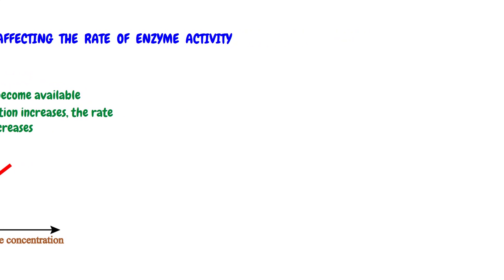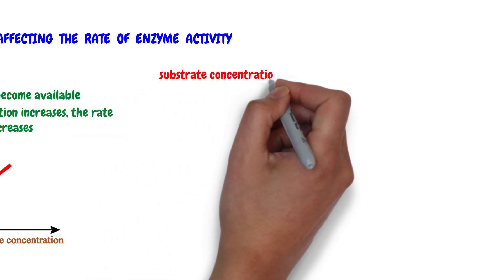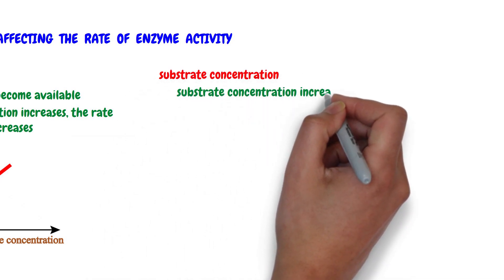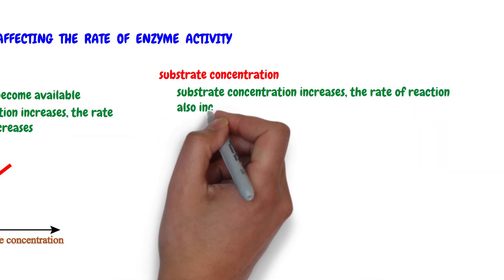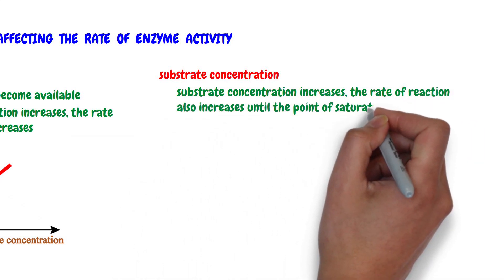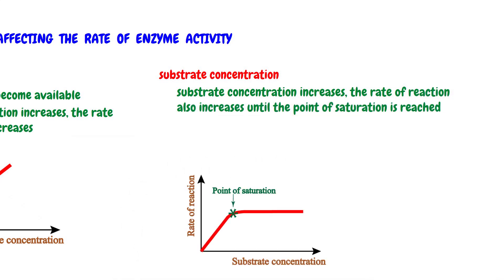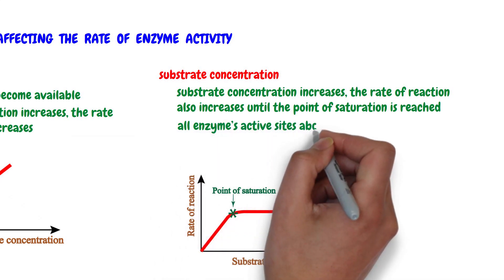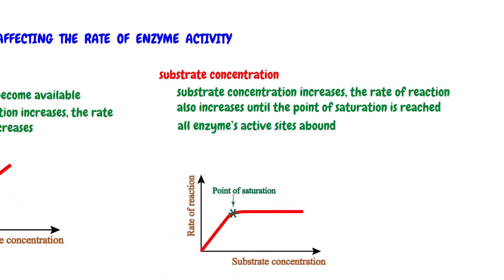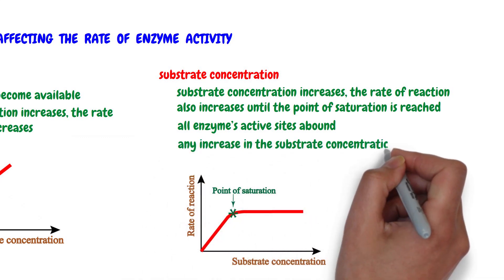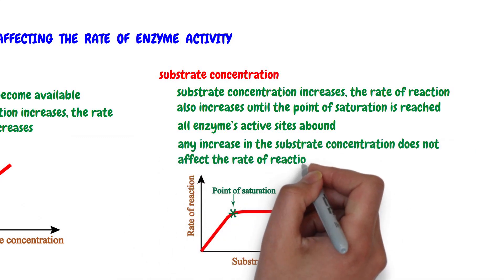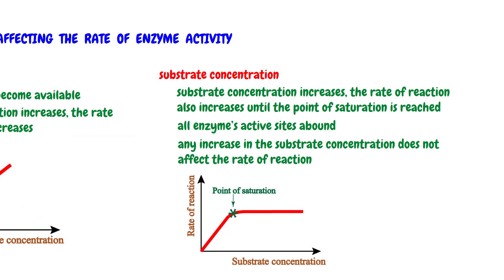The second factor is the substrate concentration. As the substrate concentration increases, the rate of reaction also increases until the point of saturation is reached. A point of saturation, also called the limiting point, is a point at which all enzymes' active sites are bound, and therefore enzymes become saturated. Beyond this point, any increase in the substrate concentration does not affect the rate of reaction, as shown by the flat line after the point of saturation on the graph.